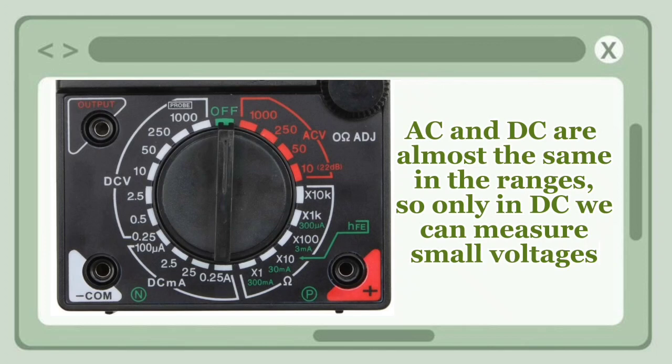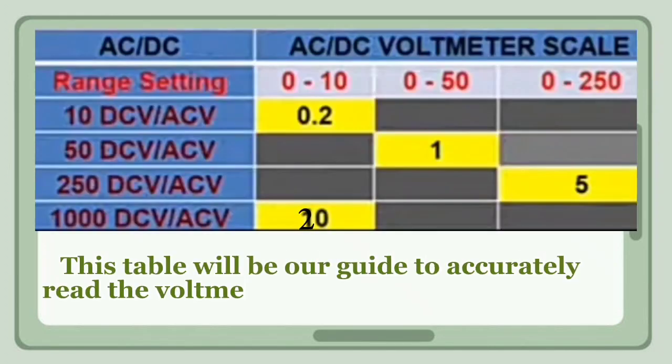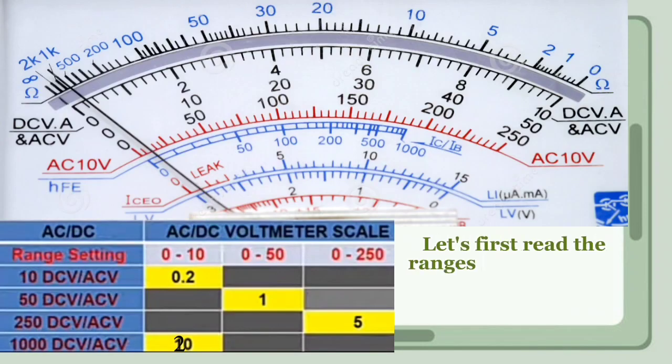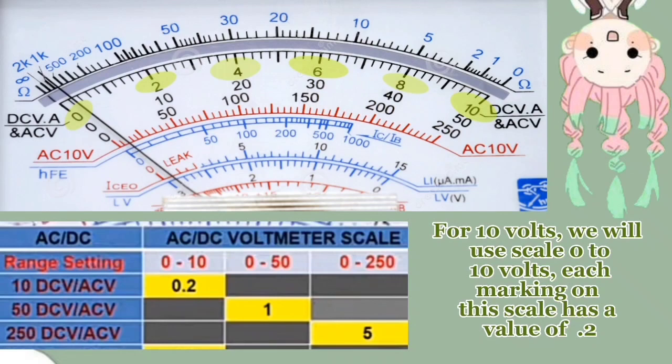The table will be our guide to apparently read the voltmeter scale in different ranges. Let's first read the ranges that have both AC and DC. This is the range 10 volts, 50 volts, 250 volts, and 1000 volts. For 10 volts, we will use the scale 0 to 10 volts.